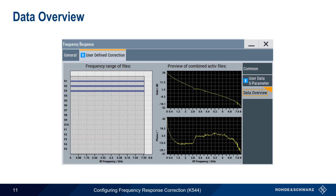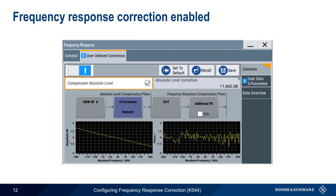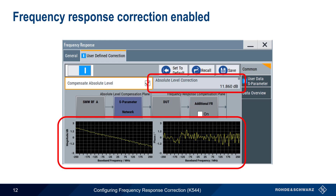On the left side of the data overview tab, we see the frequency range covered by each of our S parameter or frequency response files. Here, all three S parameter files contain correction data from 0 to 8 gigahertz. And on the right side, we see graphs of the combined magnitude and phase response for all of the enabled files. After adding frequency response correction data in the form of S parameter files and enabling compensate absolute level, we can see both the amount of level correction here — 11.86 dB — as well as the magnitude and phase corrections over the bandwidth of the generated signal.